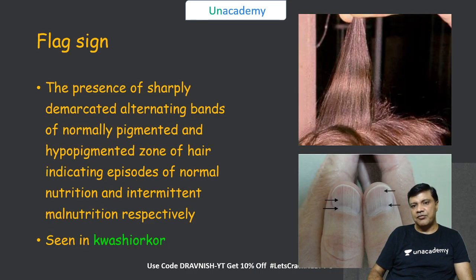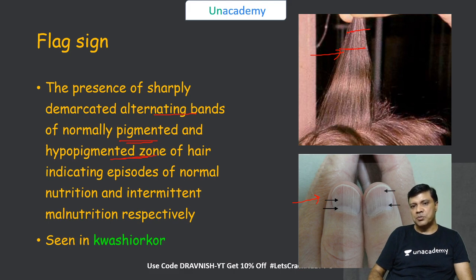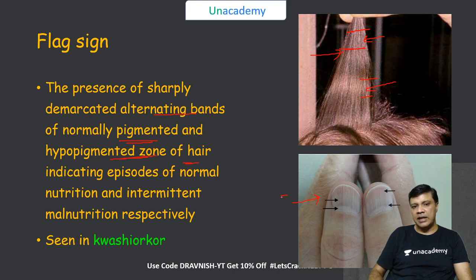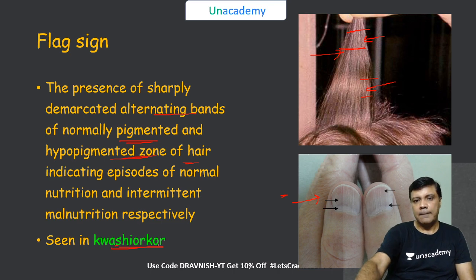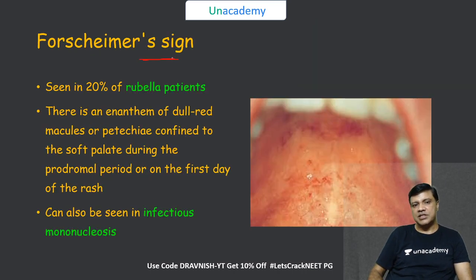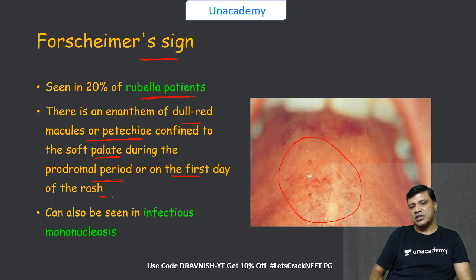The flag sign is seen over the hair and nails as alternating bands of normal pigmentation and hypopigmentation. Normal pigmentation corresponds to episodes of normal nutrition and hypopigmentation to episodes of intermittent malnutrition, making it a feature of kwashiorkor. The Forchheimer sign, seen in rubella patients, is an enanthem in the oral cavity characterized by dull red macules or petechiae over the soft palate during the prodromal phase. It can also be seen in infectious mononucleosis.